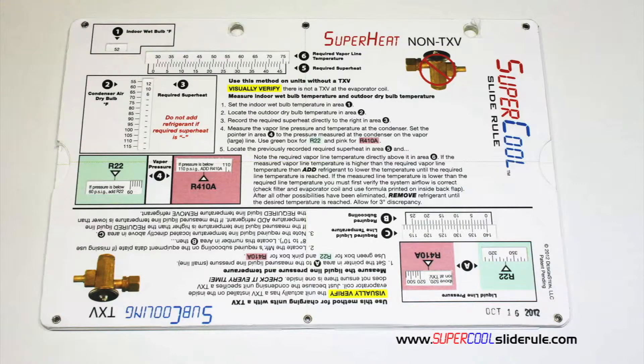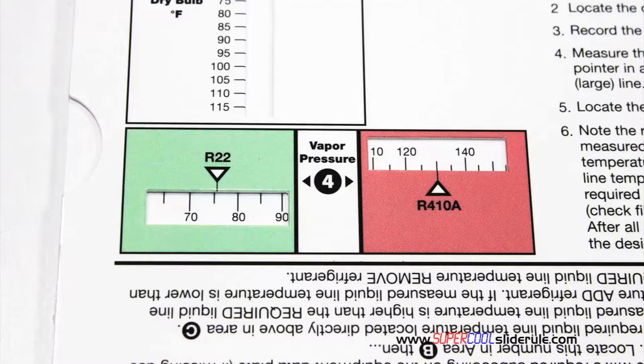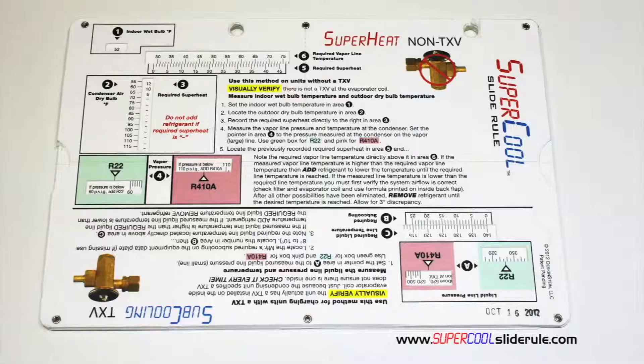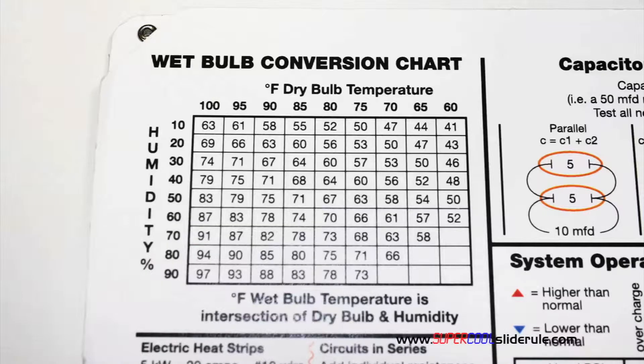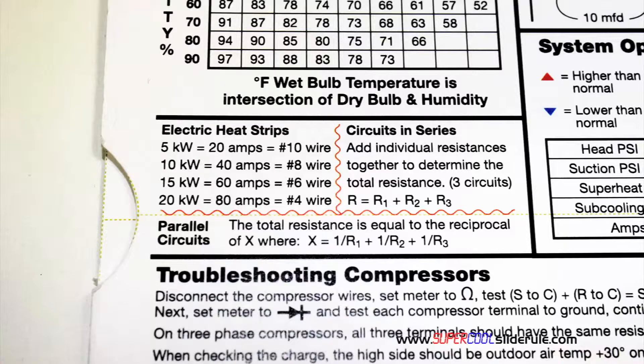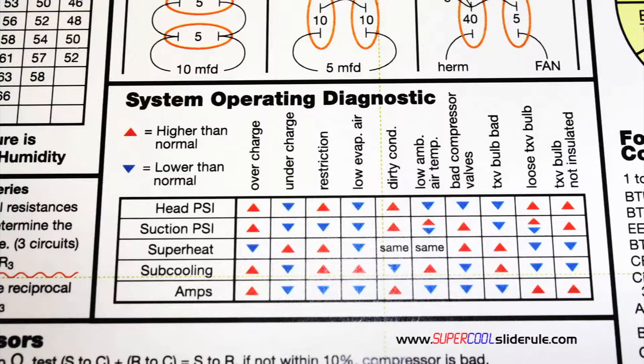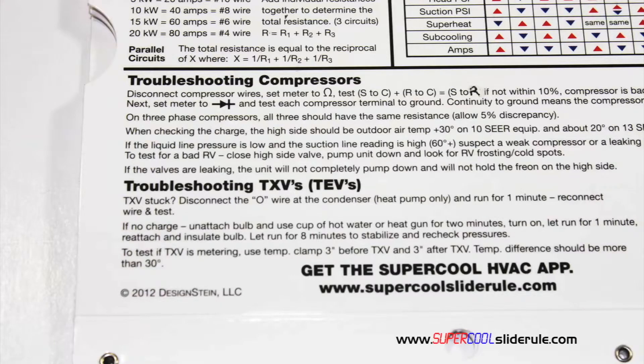Thankfully, those days are gone. This one tool will allow you to charge a system with R22 or R410A in either the superheat or subcooling method. The back cover contains required formulas, capacitor rules and practices, a wet bulb conversion chart, how to perform computations on series or parallel circuits, an electric heat strip guide, a complete system troubleshooting diagnostic chart, and how to troubleshoot compressors and TXV.